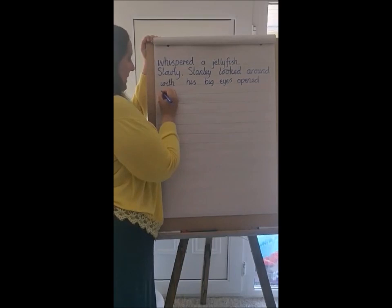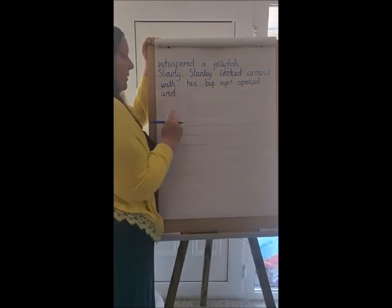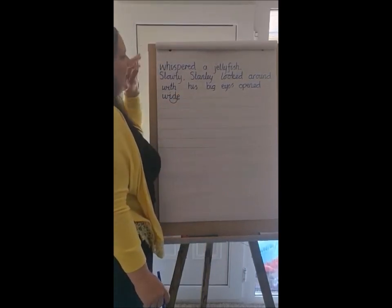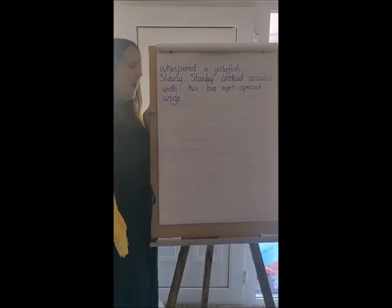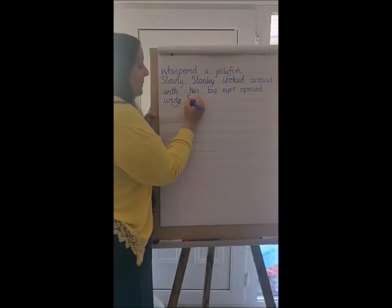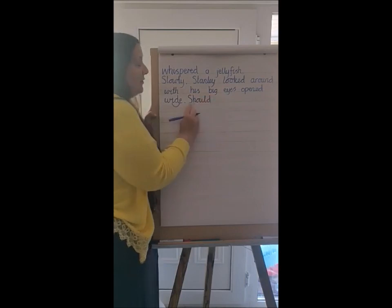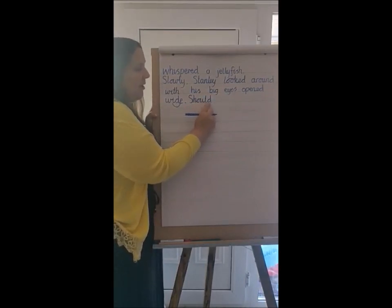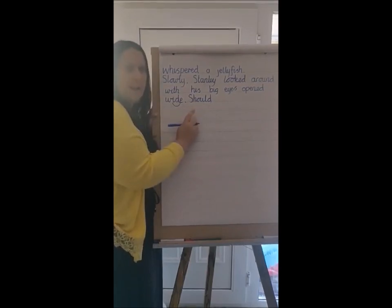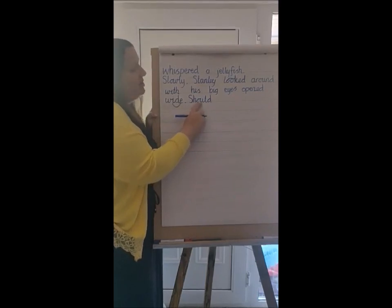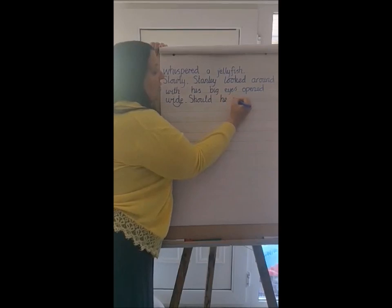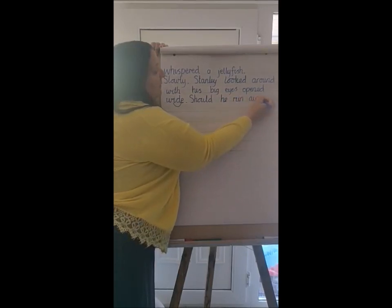With his big eyes opened wide — the 'i' sound in 'wide' uses a split digraph. 'Slowly Stanley looked around with his big eyes open wide.' Full stop. Now as the narrator I'm going to ask a question — capital letter for the beginning of my sentence. The spelling of 'should': o-u-l-d — oh you lucky duck! Should, could, would — they all follow that pattern. So: 'Should he run away?' — there's another question in there. Brilliant.